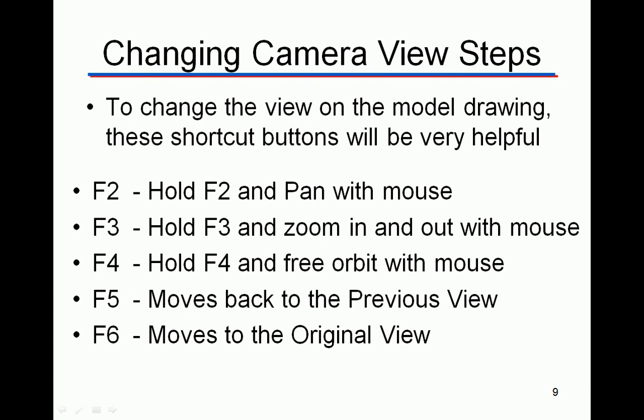When you're in the model moving it around and changing the camera view, there are some function buttons that help you an extreme amount and you should get used to using them. Hold F2 and pan with the mouse — or if you have a scroll wheel, hold it down and move the model around. F3 allows you to zoom in and zoom out with the mouse, and you can also use the scroll wheel to zoom in and out. As with Inventor, there's always more than one way to do something.